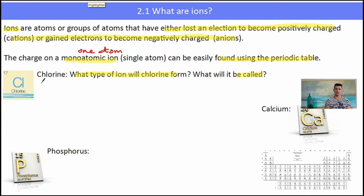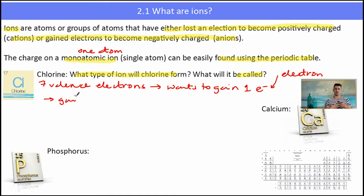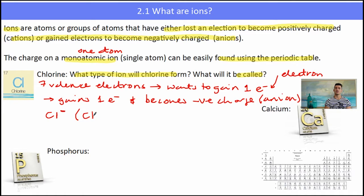So chlorine — chlorine is in group 17. It has 7 electrons in its outer shell, so it has 7 valence electrons. Now it would be very hard for chlorine to lose 7 electrons, so what it wants to do is make a full or stable outer shell — it wants to gain 1 electron to have 8 electrons in its outer shell. So it will gain 1 electron to become negatively charged. Gaining an electron means you become negative. It will now have 8 electrons in its outer shell and become negatively charged — we call something that has become negatively charged an anion. So non-metals form anions. Its symbol will be Cl⁻.